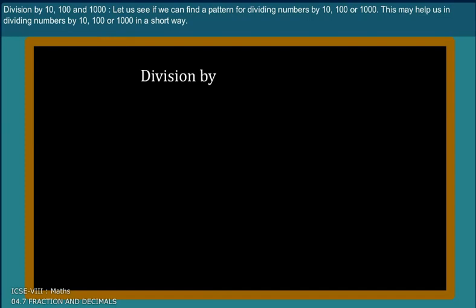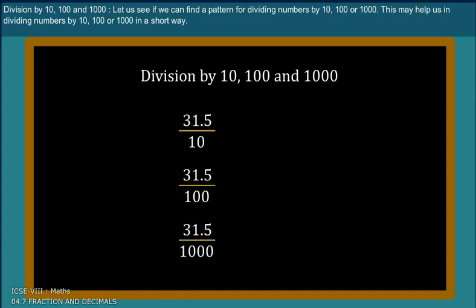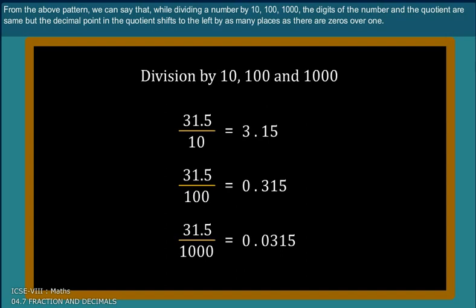Division by 10, 100, and 1000. Let us see if we can find a pattern for dividing numbers by 10, 100, or 1000. This may help us in dividing numbers by 10, 100, or 1000 in a short way. From the above pattern, we can say that while dividing a number by 10, 100, 1000, the digits of the number and the quotient are same, but the decimal point in the quotient shifts to the left by as many places as there are zeros over one.